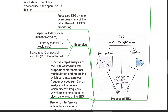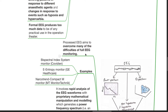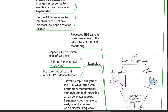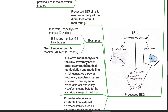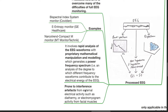Processed EEG aims to overcome many of the difficulties of full EEG monitoring, which includes the bispectral index (BIS) system, e-entropy monitor, and Narcotrend compact monitor. It involves rapid analysis of EEG waveforms with proprietary mathematical manipulation and modeling, which generates a power frequency spectrum — an analysis of the degree to which different frequency waveforms contribute to the electrical energy of the EEG. However, it is prone to interference artifacts from external electrical activity such as diathermy or electromyogram activity from facial muscles.